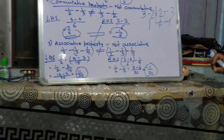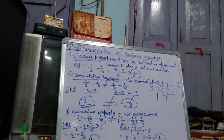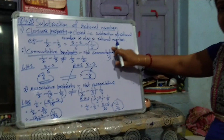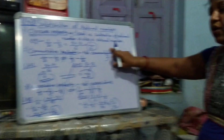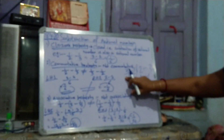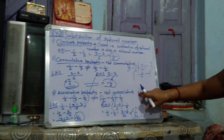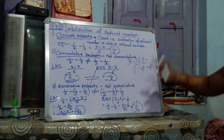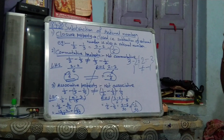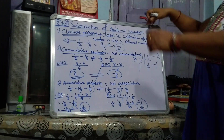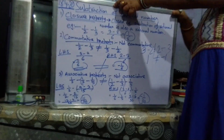So these are the properties of rational numbers under subtraction: closure — yes, subtraction is closed; commutative — no; associative — no. This is all about the properties of subtraction.